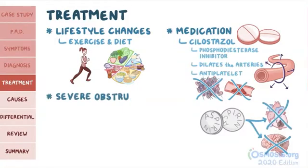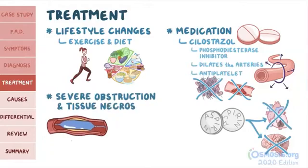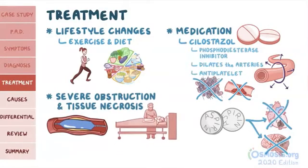When there's severe obstruction and tissue necrosis, endovascular or surgical procedures are done to preserve the affected limb. Now, let's take a look at some of the other less common causes of peripheral artery disease other than atherosclerosis.